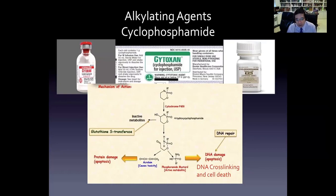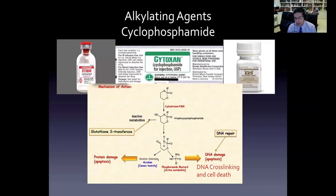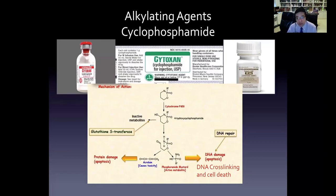Alkylating agents such as cyclophosphamide are utilized in the most severe cases - usually systemic vasculitis and necrotizing scleritis. Cytoxan results in DNA cross-linking, cell death, and apoptosis of rapidly dividing cells. It also causes localized protein damage. One of the byproducts and metabolites of cyclophosphamide is acrolein, which is actually the thing that causes toxicity - specifically bladder toxicity.